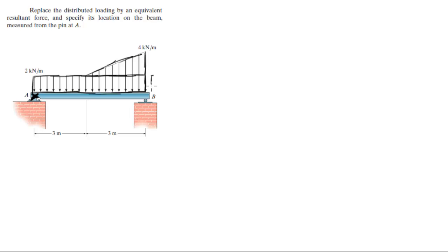As you can see, we got this rectangle has a height of 2 kilonewtons and this triangle has a height of 2 kilonewtons. 4 minus 2 is 2 and this is the height of this triangle.